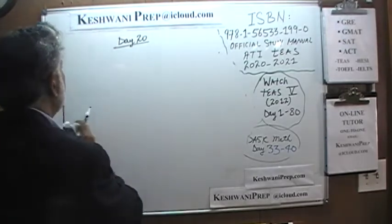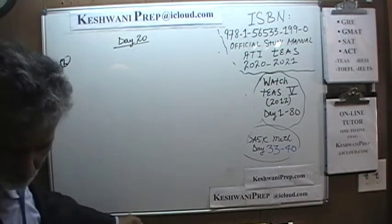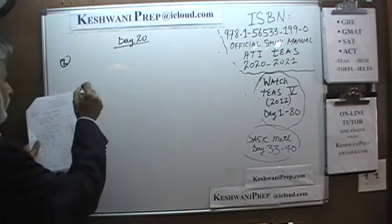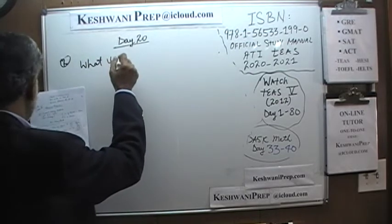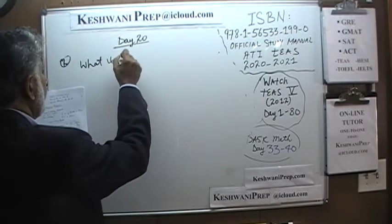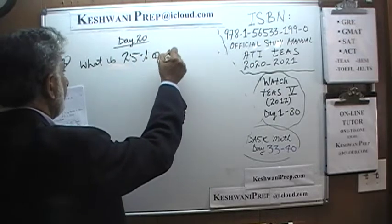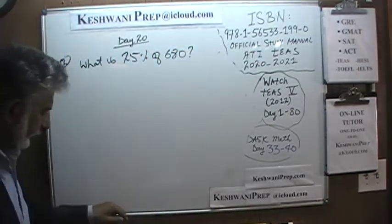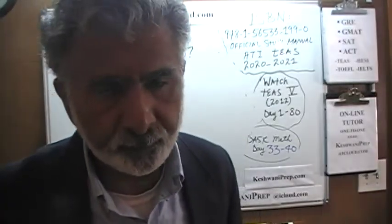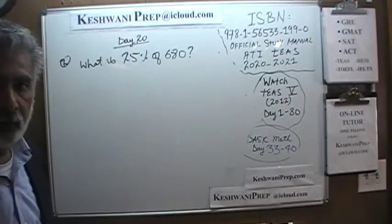Number 2. Number 2 says: what is 25% of 680? Again, we did a problem very similar to this one yesterday. Let's find out. 25% of 680.